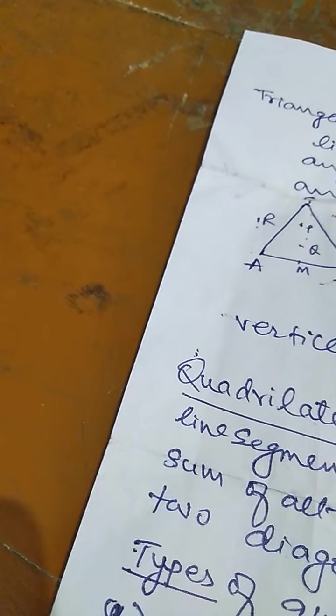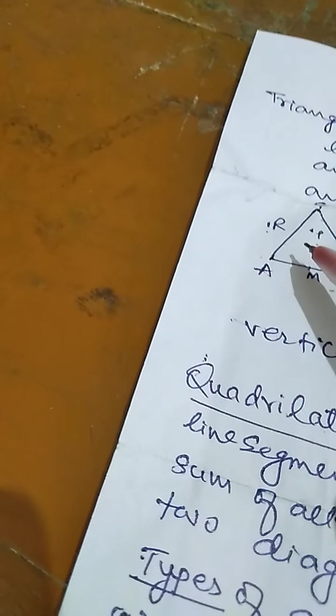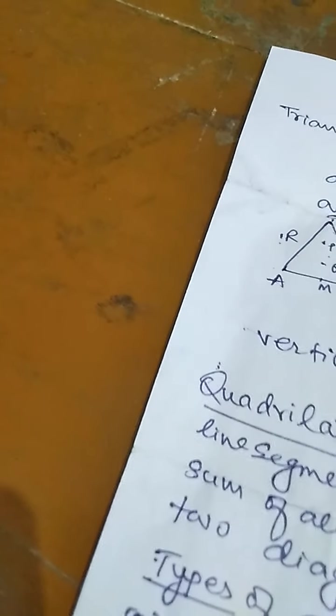Now, a triangle, I told you that it has 6 parts. The 3 angles and the 3 sides are called the parts of the triangle.